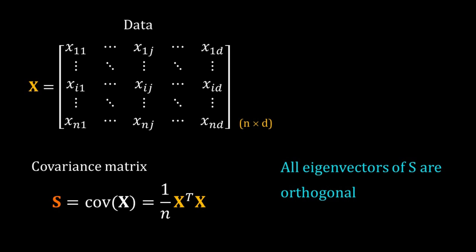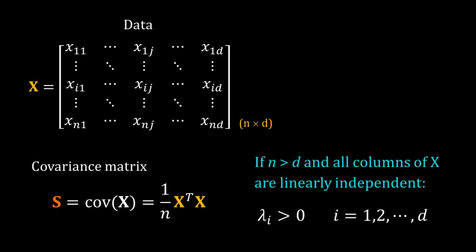More interesting for us in PCA are the eigenvalues and eigenvectors of S. All eigenvectors of S are orthogonal to each other. That is because S is a symmetric matrix. This property is very useful in PCA. If N is greater than d that is the number of samples is more than number of variables and all columns of X are linearly independent then S has d positive eigenvalues. Note that with these two conditions S has the full rank and the rank is d.